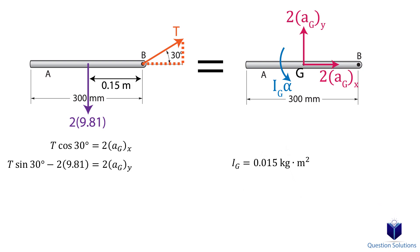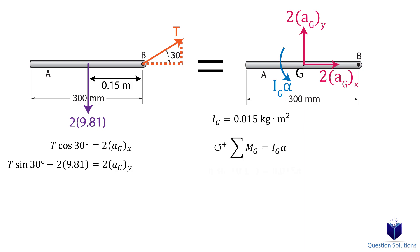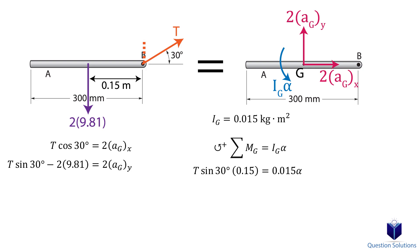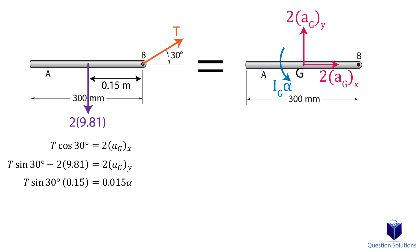Now we write the moment equation about the center of mass, picking counterclockwise as positive. Only the y component of tension creates a moment, since the x component passes through the line of action at the center. The perpendicular distance from the y component to the center is 0.15 meters. On the other side, we have the mass moment of inertia multiplied by the angular acceleration. We now have three equations but four unknowns, so we need to consider the acceleration at point B using relative acceleration.